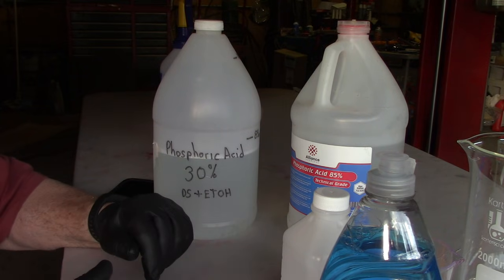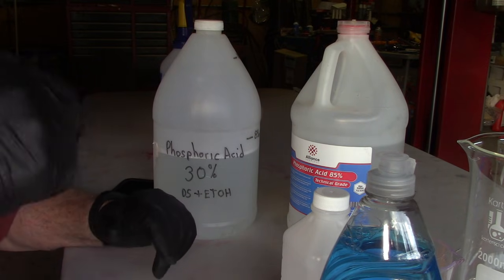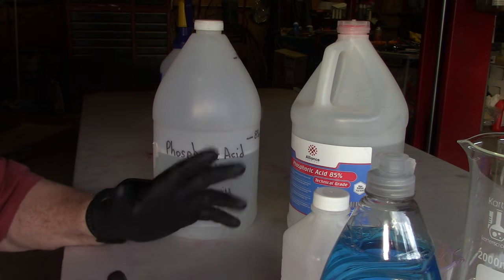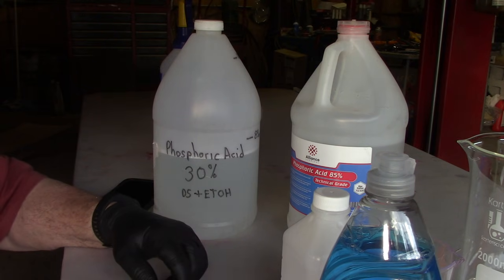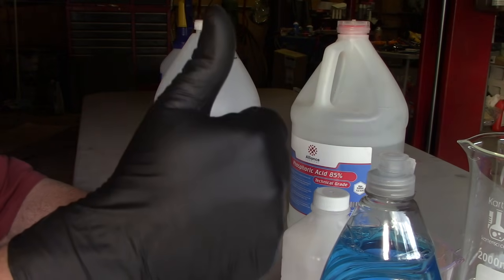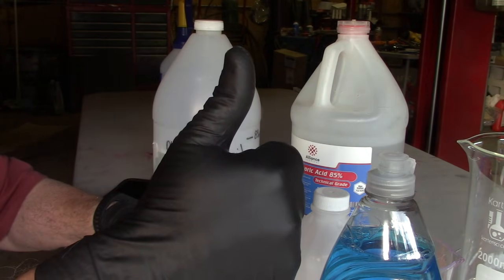But I'm not going to waste your time here. So I think that's about it. That's how you mix up the phosphoric acid rust converter. If you have any questions, leave them in the comments. I hope I covered everything. And you know the deal, like and subscribe. I'll see you in the next video.